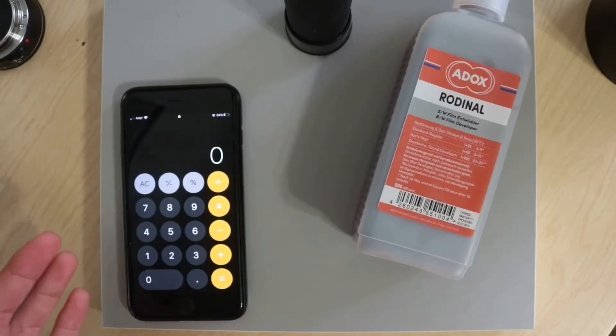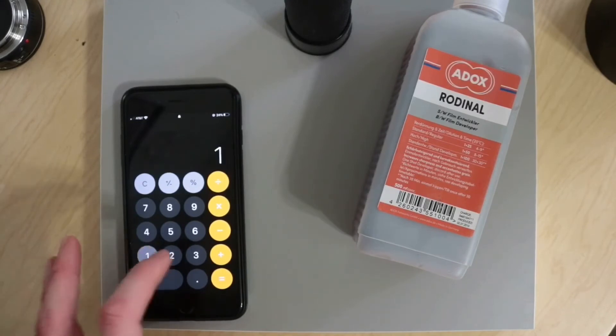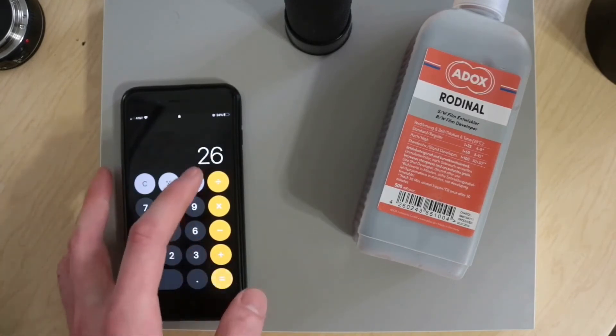So you'll just add those two together to get your total working parts. So 1 plus 25 is 26.